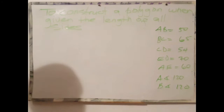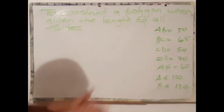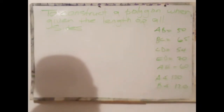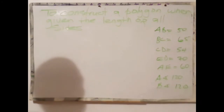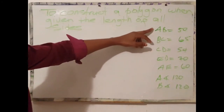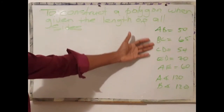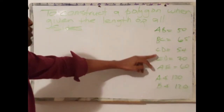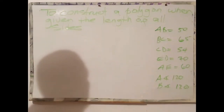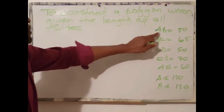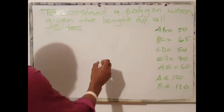It's very important to represent written information like this in a graphical form. Based on what we have, this represents a five-sided figure — one, two, three, four, five — which is a pentagon. The first step would be to sketch our base.